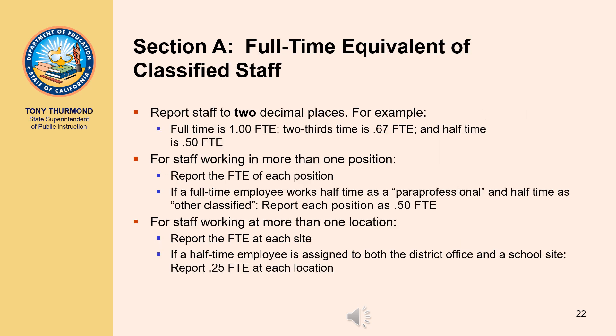When reporting classified staff, report FTE counts to two decimal places. For example, full-time would be reported as 1.00 FTE, two-thirds time would be reported as .67 FTE, and half-time would be reported as .50 FTE. For classified staff working in more than one position, report the FTE of each position — for example, if a full-time employee works half-time as a paraprofessional and half-time as other classified, report each position as .50 FTE. For classified staff working at more than one location, report the FTE at each site — for example, if a half-time employee is assigned to both the district office and a school site, report .25 FTE at each location.